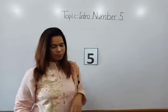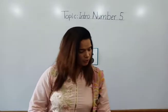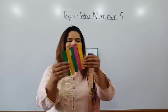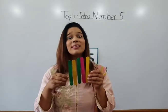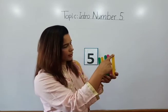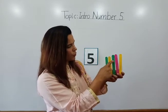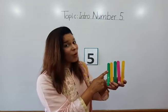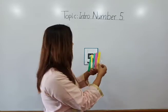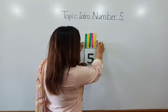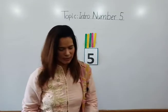Now tell me children, what is this? These are ice cream sticks. Okay, let's count the ice cream sticks. How many ice cream sticks are here? 1, 2, 3, 4, 5. How many ice cream sticks? 5 ice cream sticks! I will paste it here — here are 5 ice cream sticks.